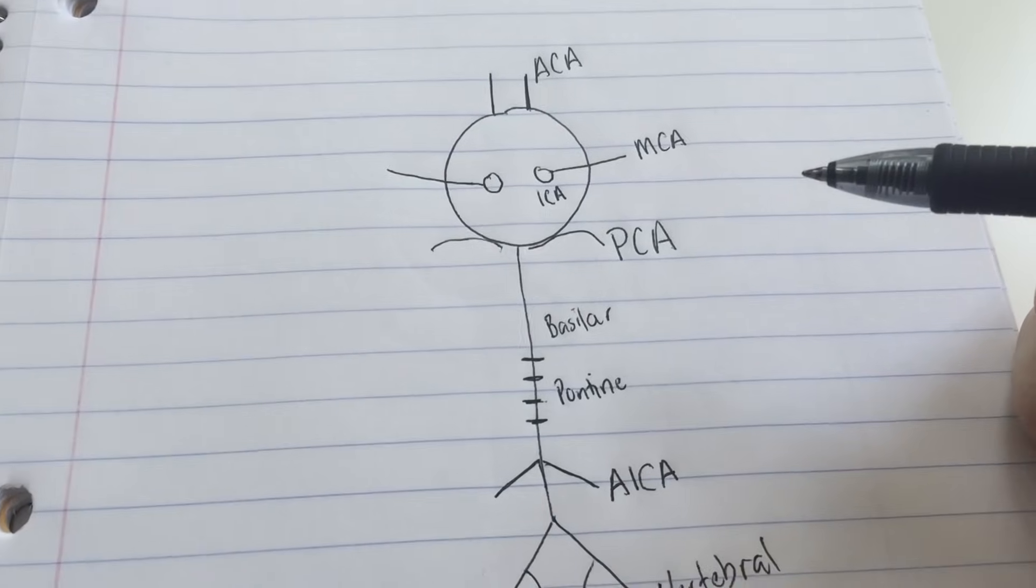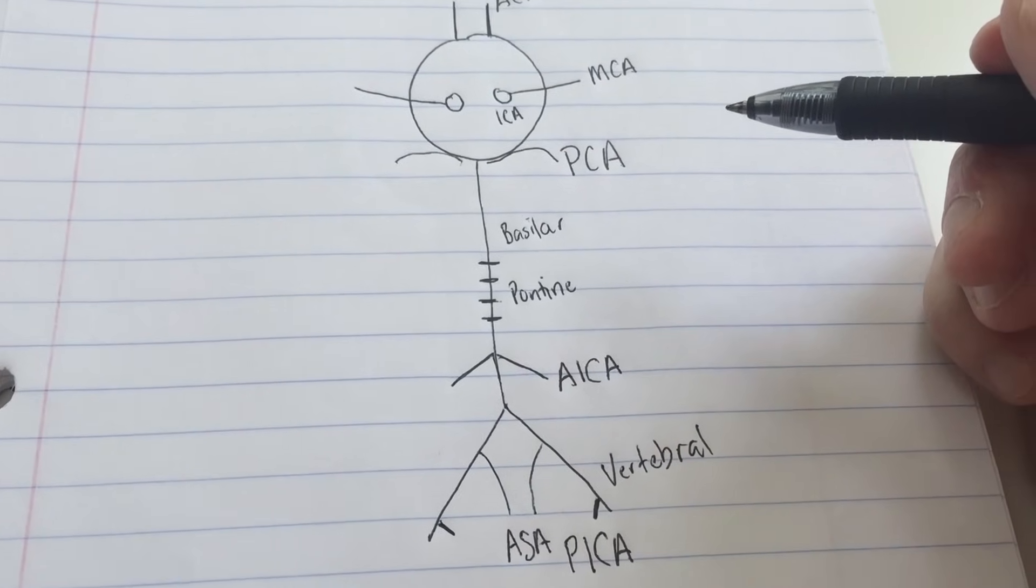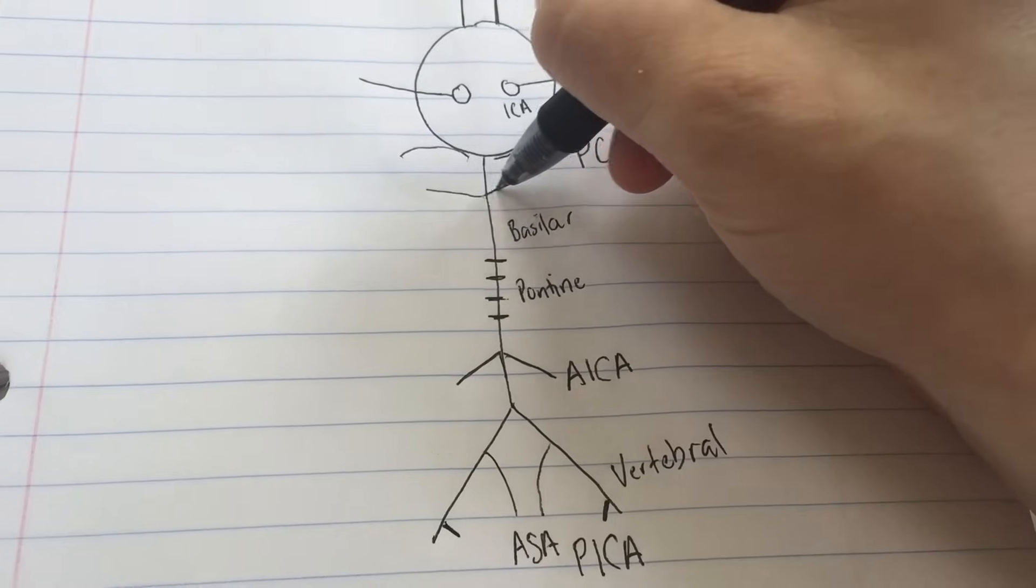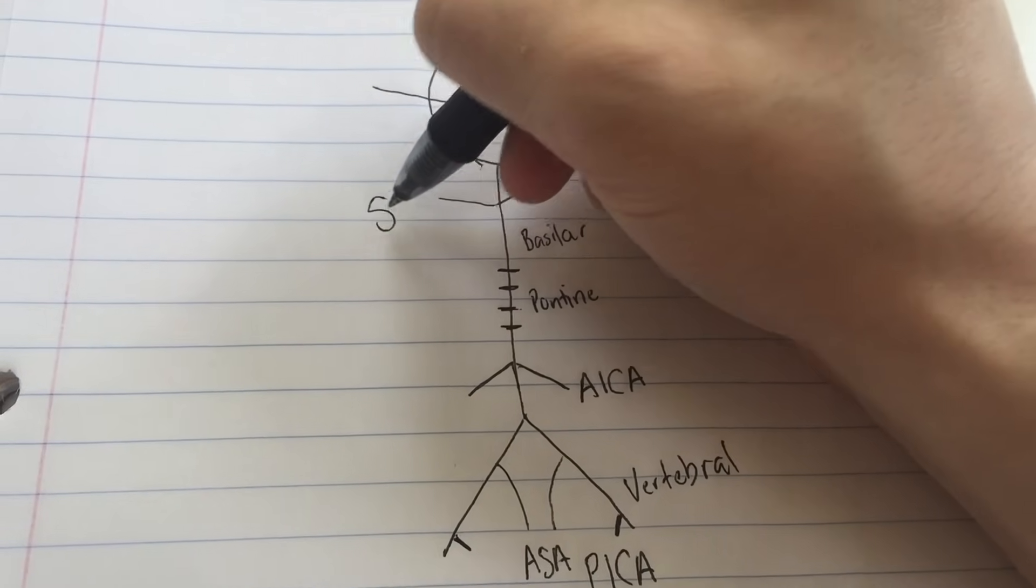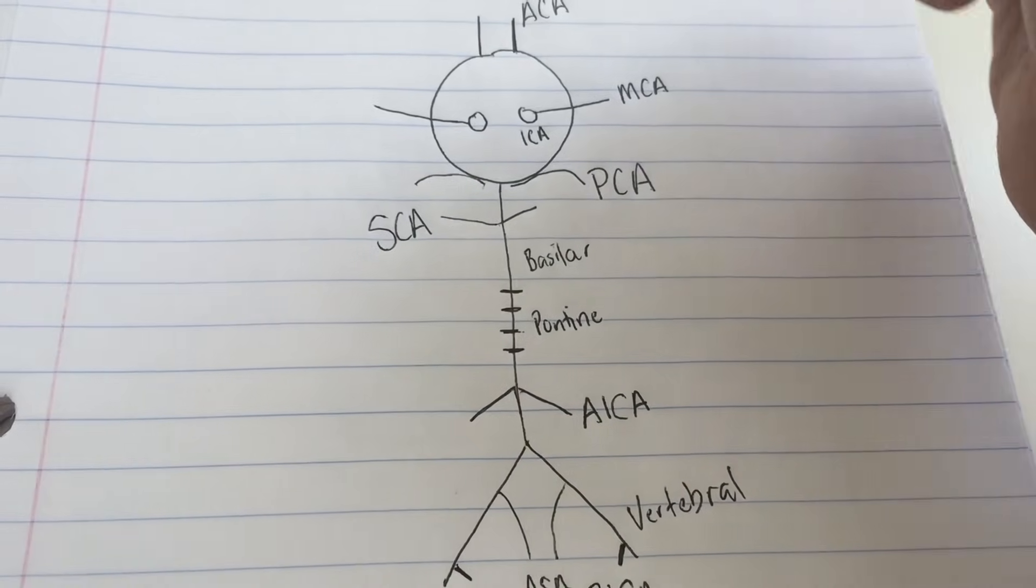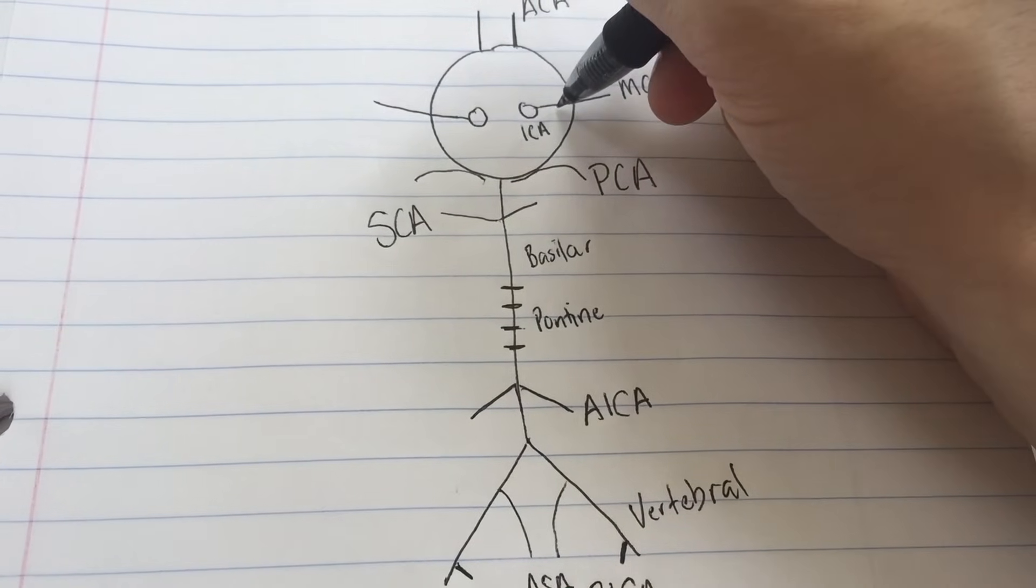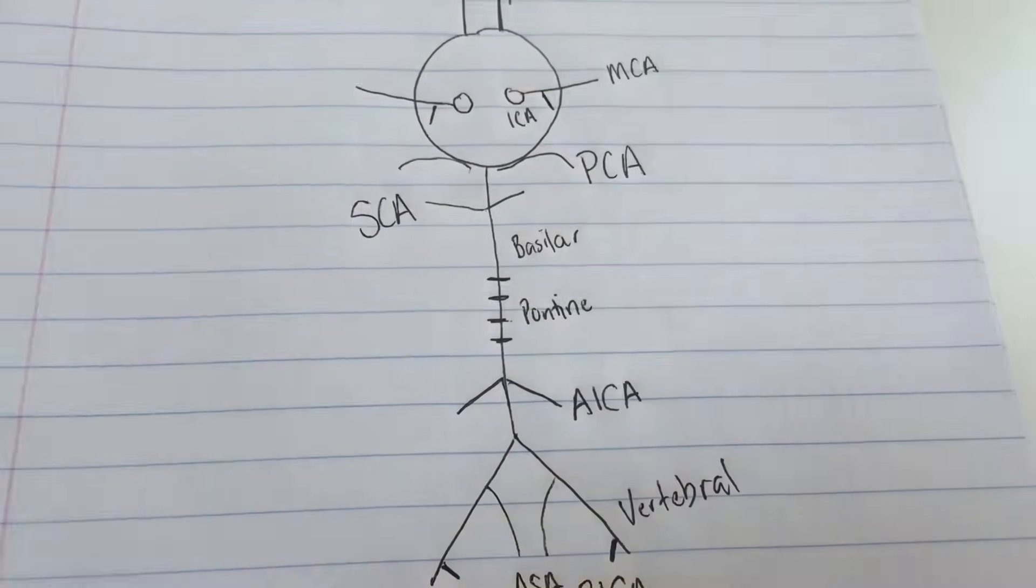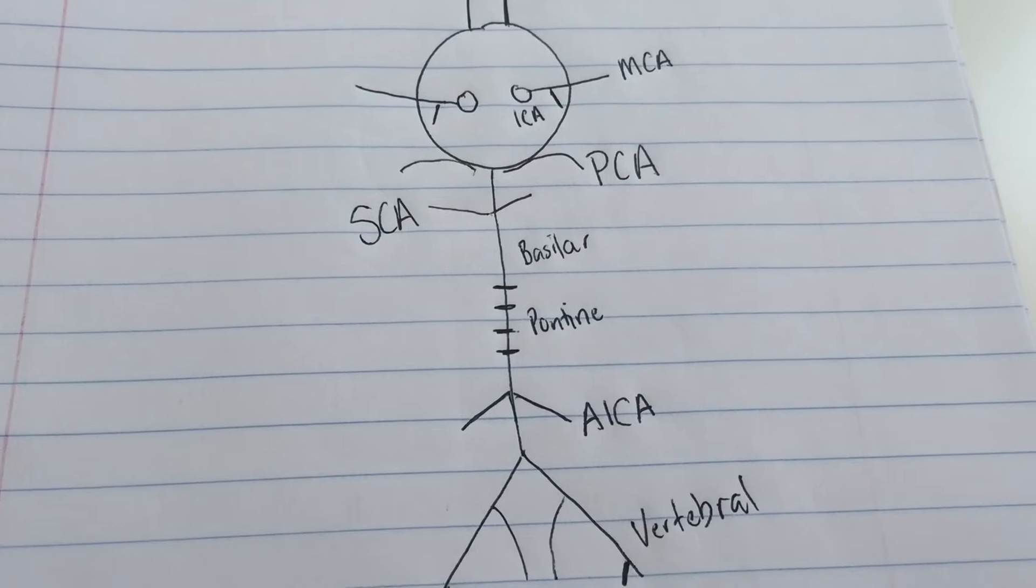The only other arteries that you need to know, and you're just going to have to memorize them, one is right here. This is going to be your superior cerebellar artery. And the other is actually off of the MCA. It kind of dips down like right here. That's going to be your anterior choroidal arteries.